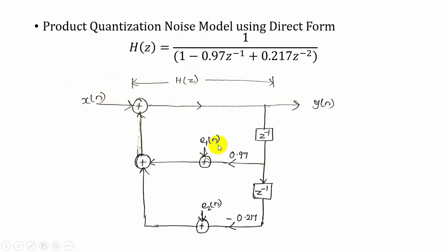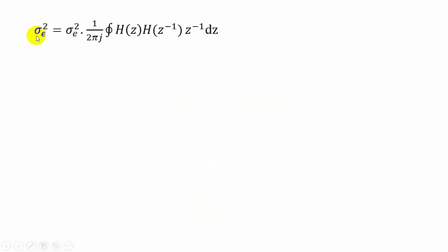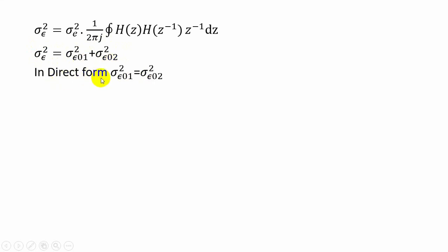In this model we have two errors e1(n) and e2(n) because of the two multipliers. When considering e1(n), it will affect the whole H(z). Similarly, e2(n) will also affect the whole H(z). We can find the output noise power using: σε² = σe² × (1/2πj) ∮ H(z) · H(z⁻¹) · z⁻¹ dz. In direct form, both noise signals e1(n) and e2(n) affect the same H(z).